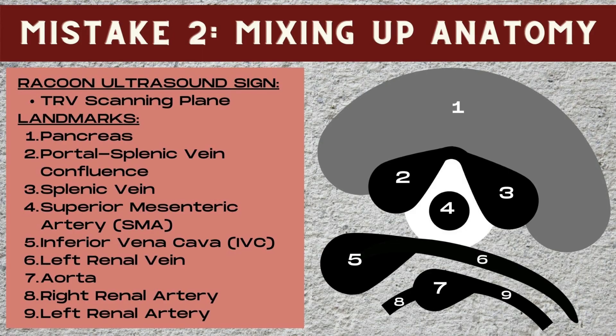When you're performing an aorta ultrasound and you're struggling with the anatomy, find the raccoon sign on ultrasound. This is a great way to orient yourself to which vessel is which. Number one on this diagram is the transverse pancreas, and it serves as the head of our raccoon. Numbers two and three are the raccoon's eyes — number two is going to be the portal splenic confluence, where three vessels unite: the portal vein, the splenic vein, and the superior mesenteric vein. Number three is the splenic vein. Below that, you're going to have echogenic fat surrounding the nose of our raccoon, which is number four — the superior mesenteric artery.